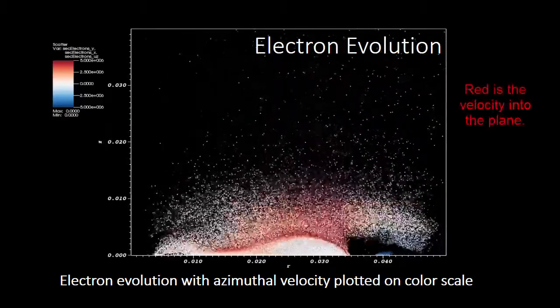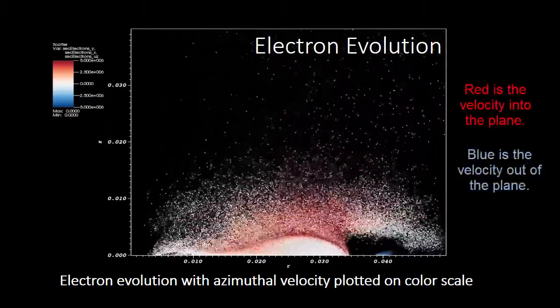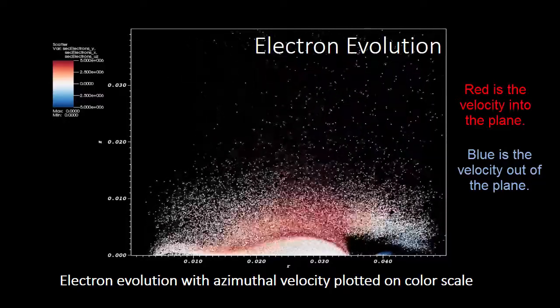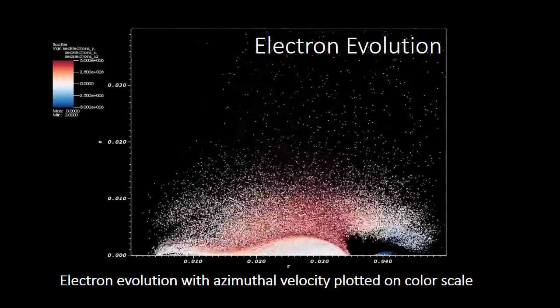The colors represent the azimuthal velocity. Red is into the plane and blue is out of the plane. This motion is caused by E cross B drift, also known as Hall current.